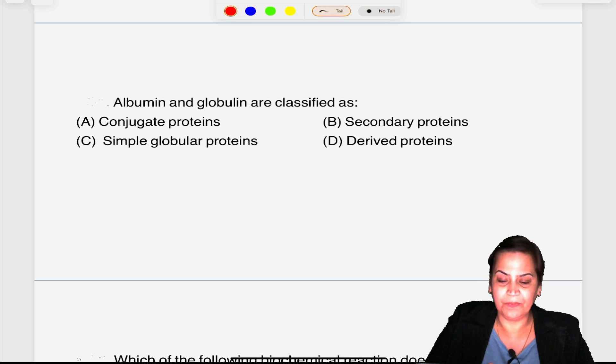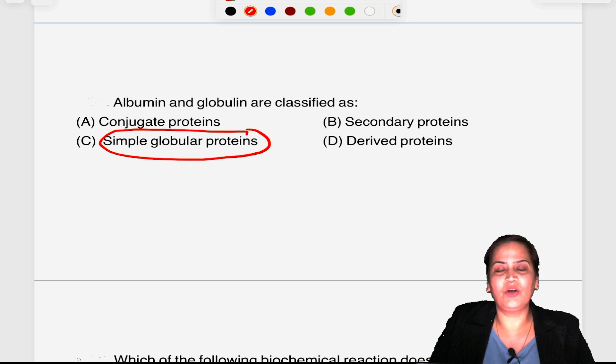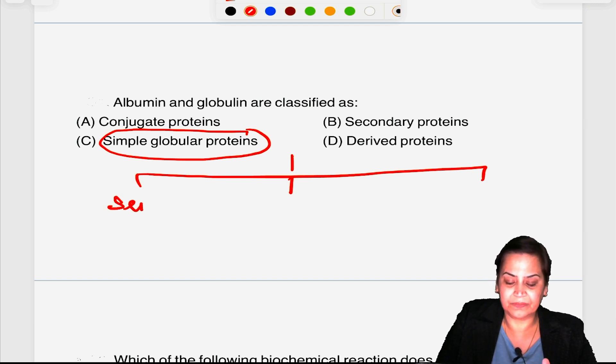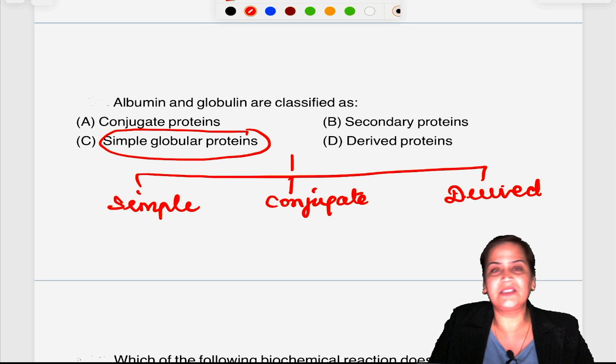Question number one: albumins and globulins are classified as? Albumins and globulins are simple proteins because whenever we study the classification of proteins, they are of three main classes: simple, conjugate, and derived. Simple includes albumins, globulins, scleroproteins, keratin, orisonin, and glutaline. Conjugate means protein plus a non-protein prosthetic group attached, and derived is which have been derived from simple and conjugate. So here the answer will be simple globular proteins.